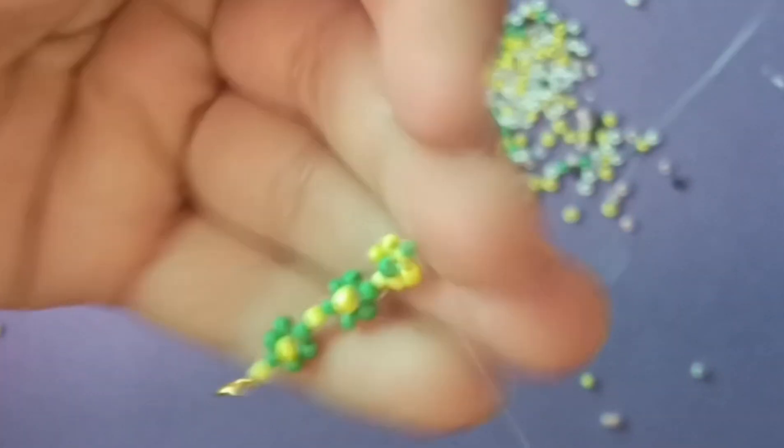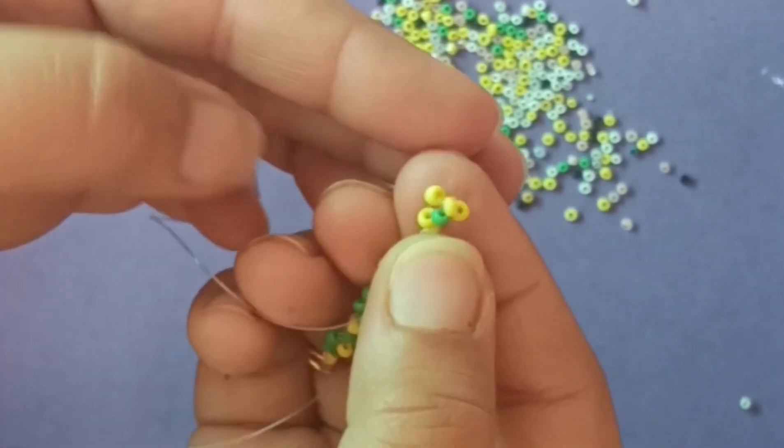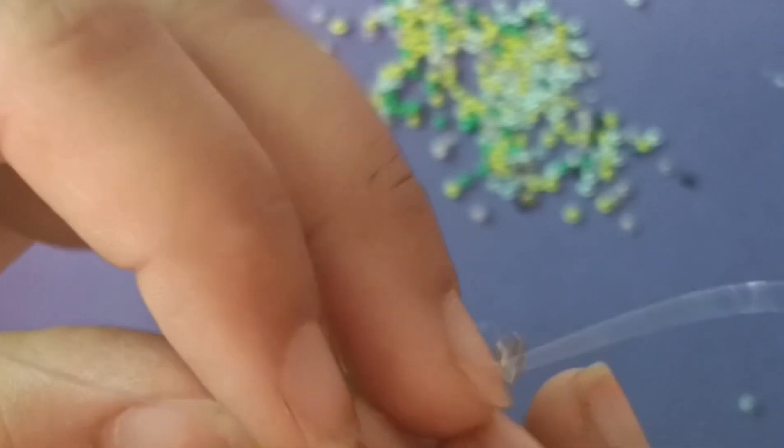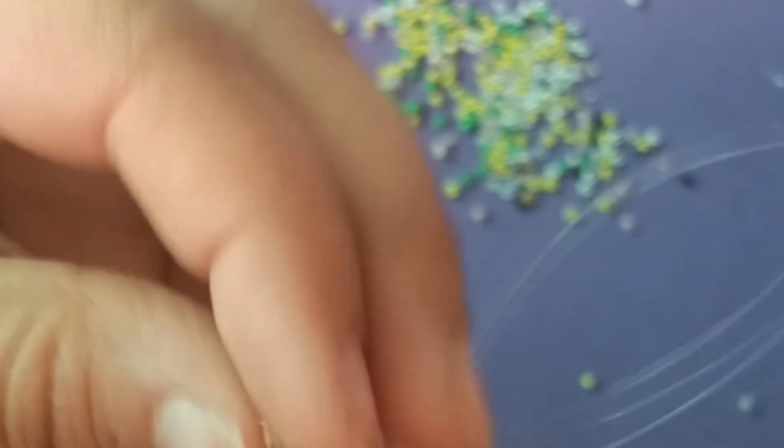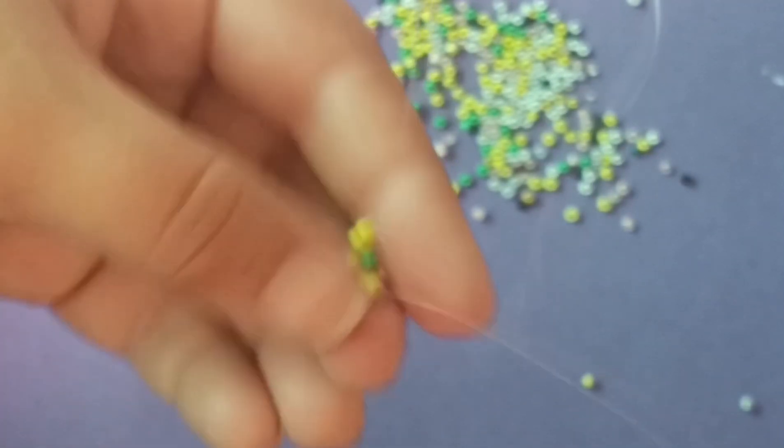Then I will make the yellow color with the same process. The green color will be removed from the middle of the wire, then again repeat the process and then make the yellow color flower. Then we will create a green color flower and this process will be made ready for our bracelet.